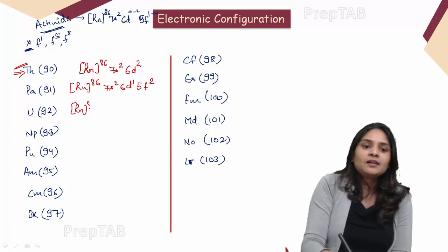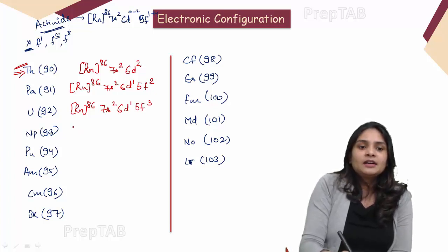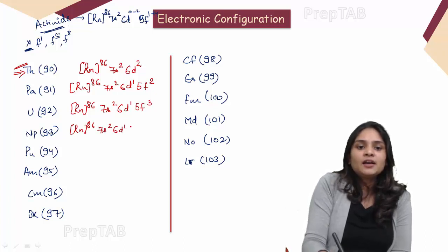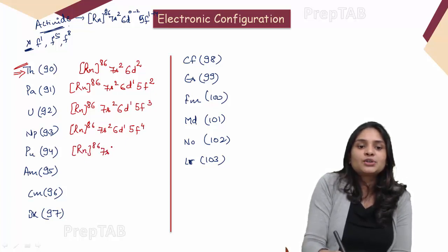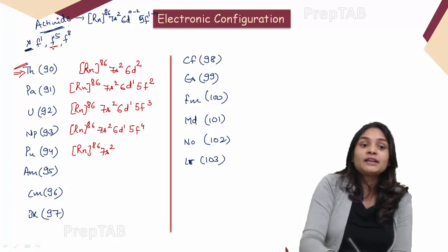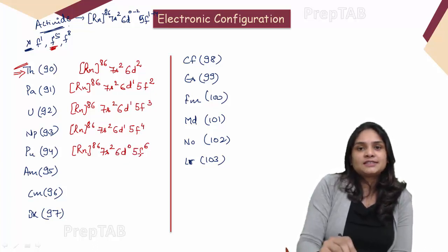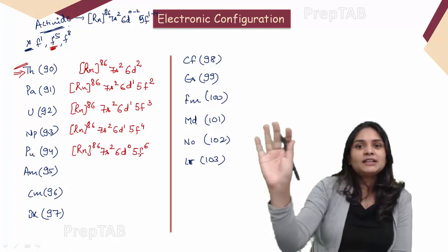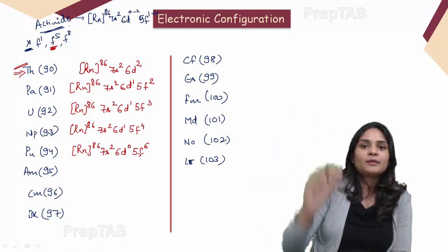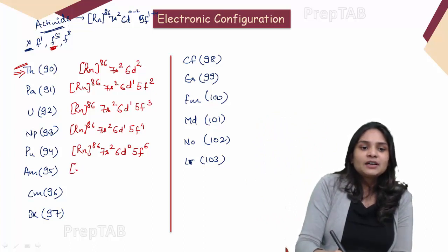Continuing actinide configurations: plutonium (94) is [Rn] 7s² 5f⁶. Americium (95) is [Rn] 7s² 5f⁷ — half-filled f achieved. Curium (96) can achieve a double half-filled state: [Rn] 7s² 5f⁷ 6d¹, by entering an electron into 5d. Then for the next element, f⁸ is not allowed, so the d electron is removed and added to f: giving [Rn] 7s² 5f⁹ with 6d⁰.